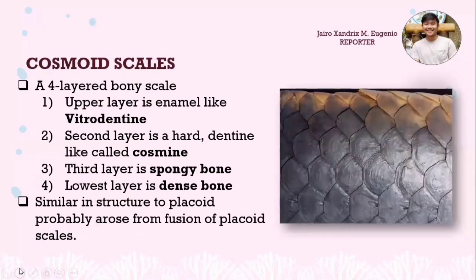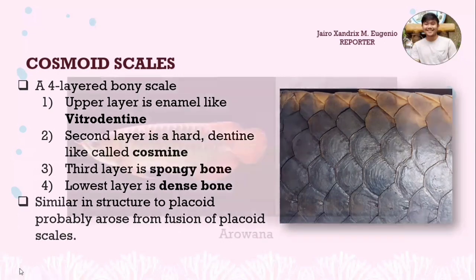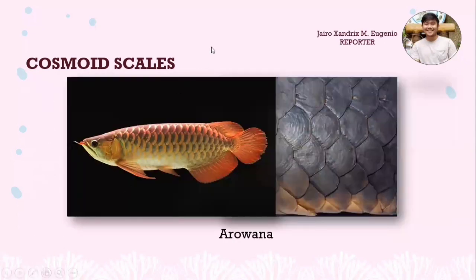The fourth type is cosmoid scales. Cosmoid scales have a four-layered bone scale: the upper layer is enamel-like vitrodentine, the second is a hard dentine-like layer called cosmine, the third layer is spongy bone, and the lowest layer is dense bone. Cosmoid scales are similar in structure to placoid, probably having arisen from the fusion of placoid scales. This is what cosmoid scales look like in arowana.